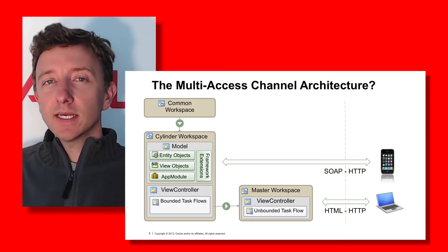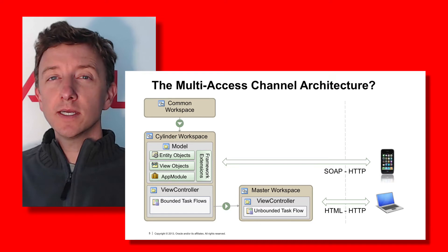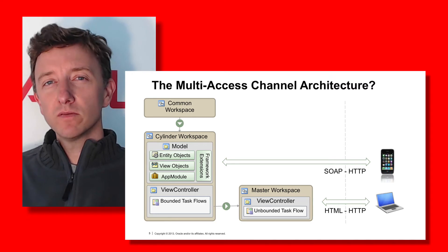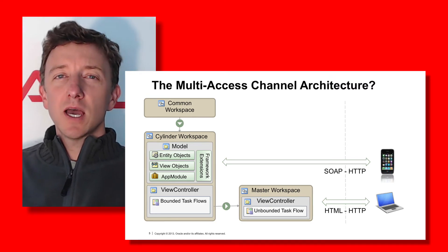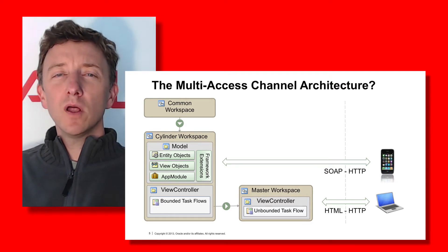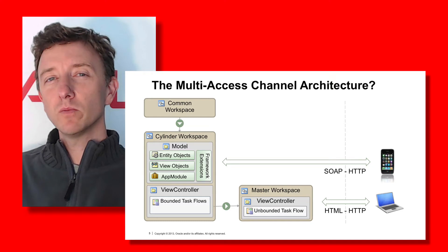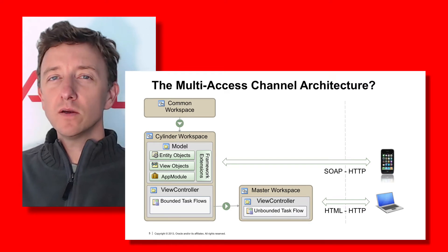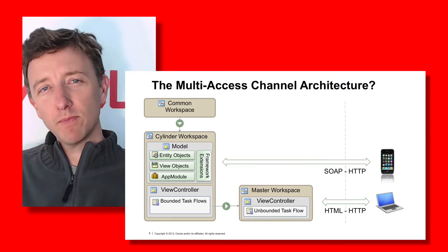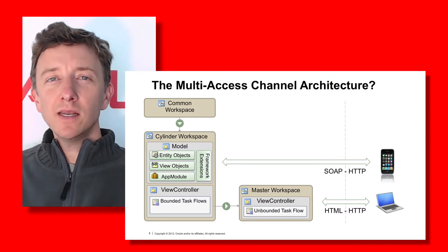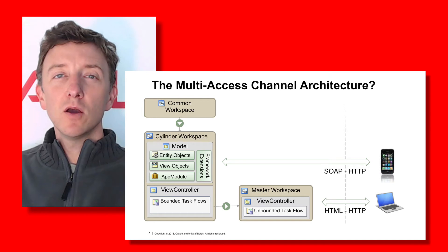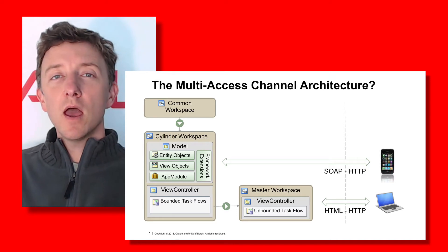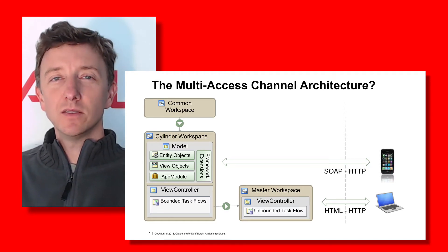Ultimately it's those entity objects — with all their business rules, default value logic, security logic — that you do want to make reuse of. When we consider the multi-axis channel architecture pattern, we have to realize there are definitely parts of our application we want to reuse, but you can't just publish all your AMs and VOs and expect mobile applications to be happy. You may need to put the entity objects back in a common workspace, and then define separate VOs and AMs for your web front-end and different VOs and AMs for your mobile front-end. You need to consider the use case.